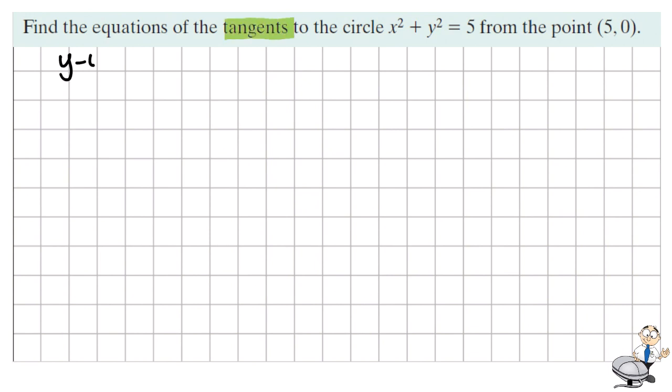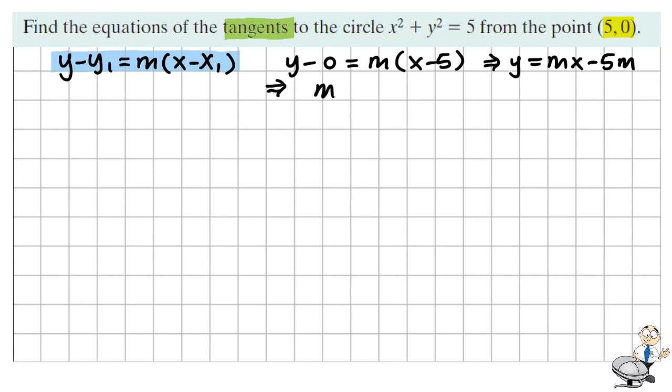Tangents are lines, so the equations of tangents would follow the equation of a line which is y minus y1 equals m times x minus x1. We know what x1, y1 is because we have a point five zero, so we sub this into the formula and tidy it up. What we see is the only thing we don't know about these two tangents is we don't know what m is.